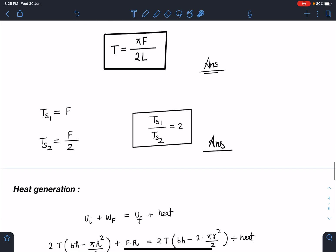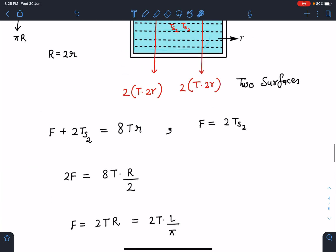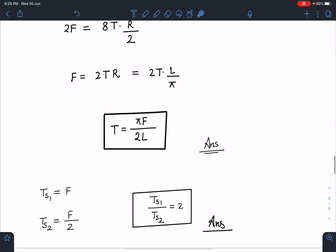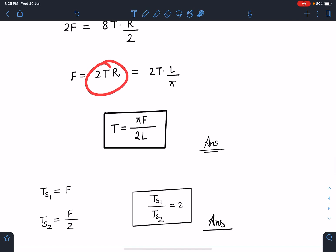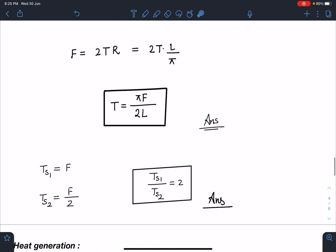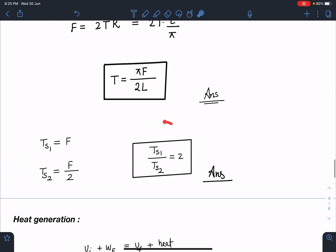Now here for the second one tension in the string initially I can write as F because it is 2TR and 2TR value we have seen here that was F. So initial tension in the string is F and finally this tension becomes F by 2 you can check in this relation. Alright. So this ratio is going to be TS1 divided by TS2 it is going to be 2.